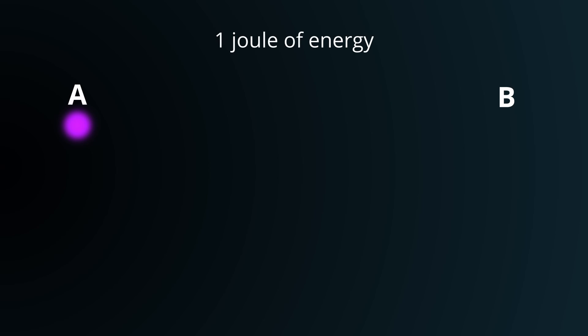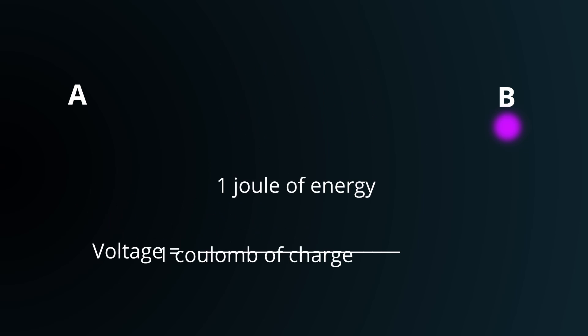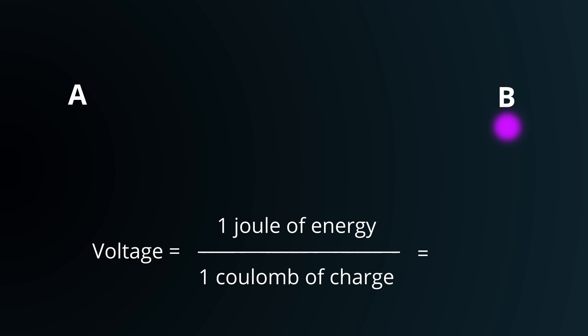If it takes one unit of energy, or in other words, one joule of energy to move one unit of charge, also known as one coulomb of charge, between two points, the potential difference, or voltage, between the two points is one volt.